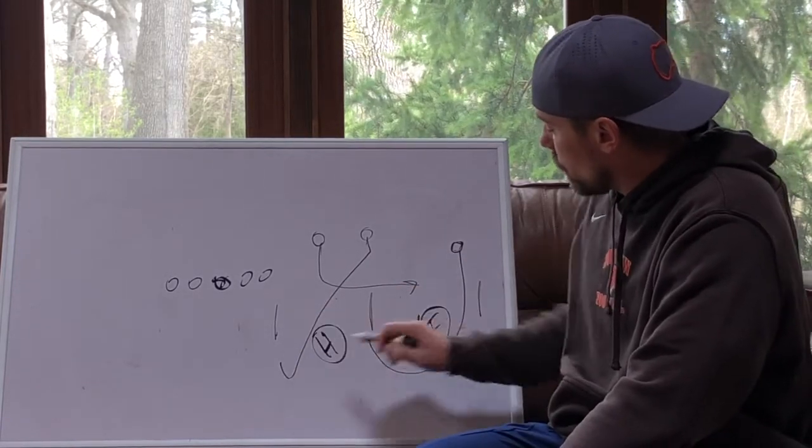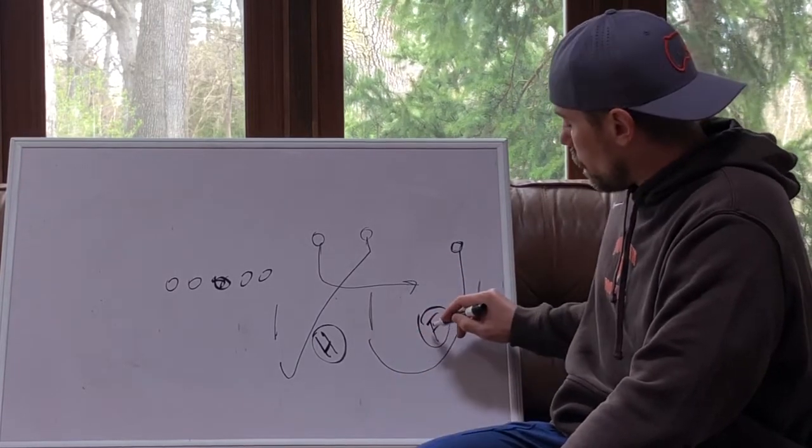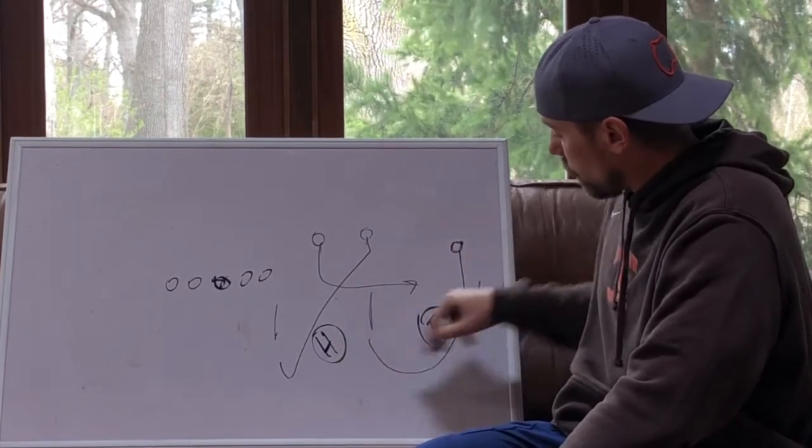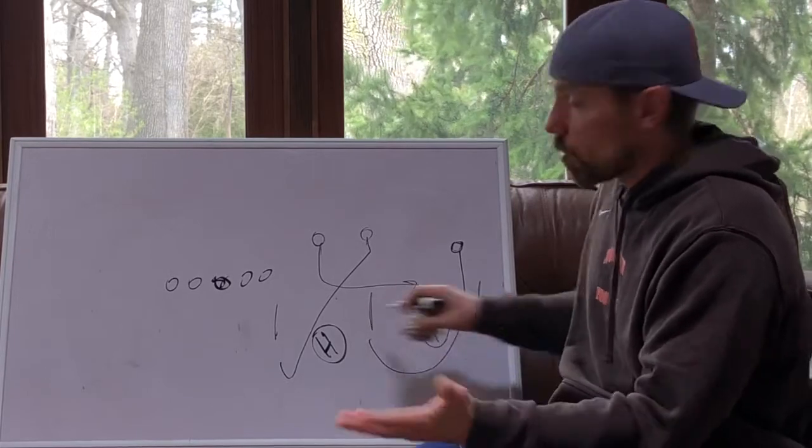If this guy jumps here and the flat player jumps the curl, then we have the out. If the flat player jumps the out, the hook player jumps the hook, we have the curl, and vice versa. Depending, you have three on two essentially.